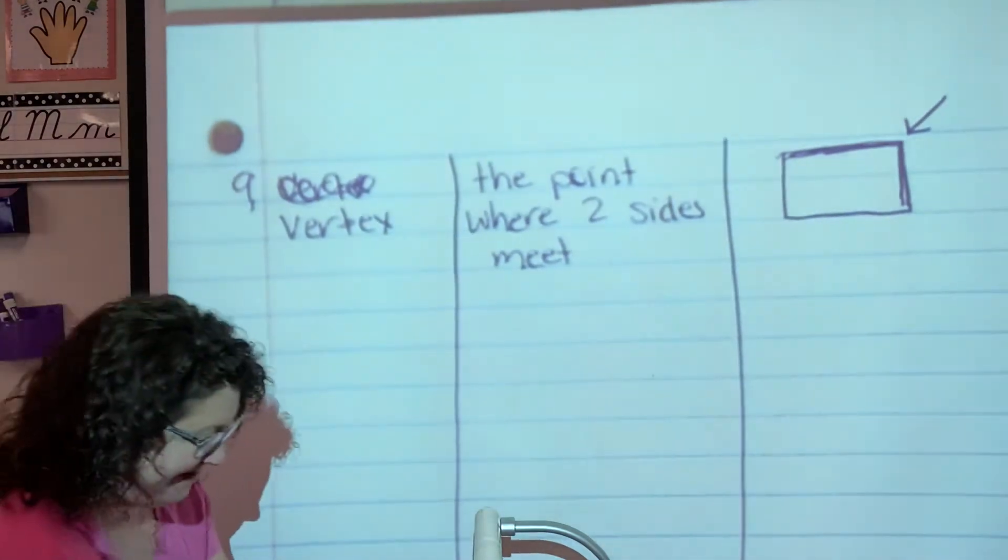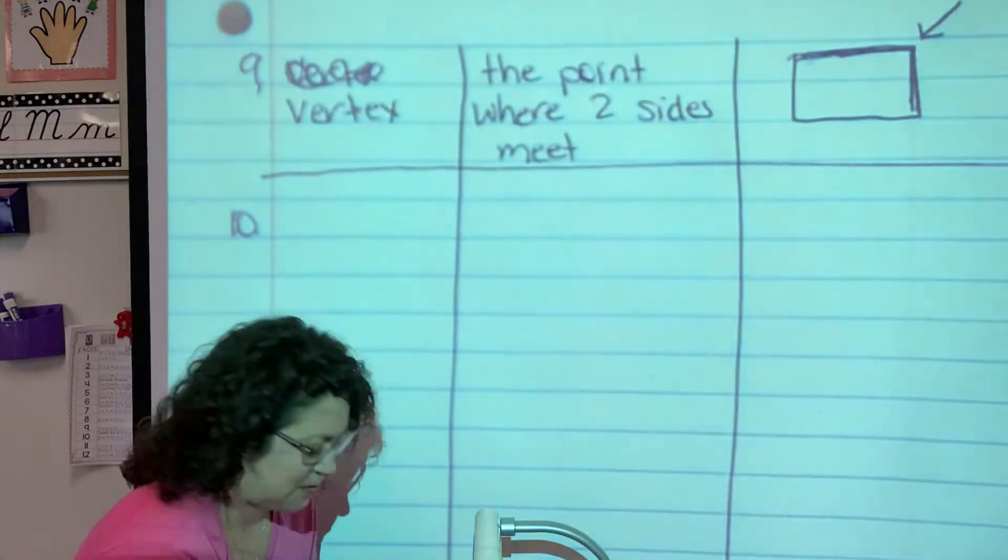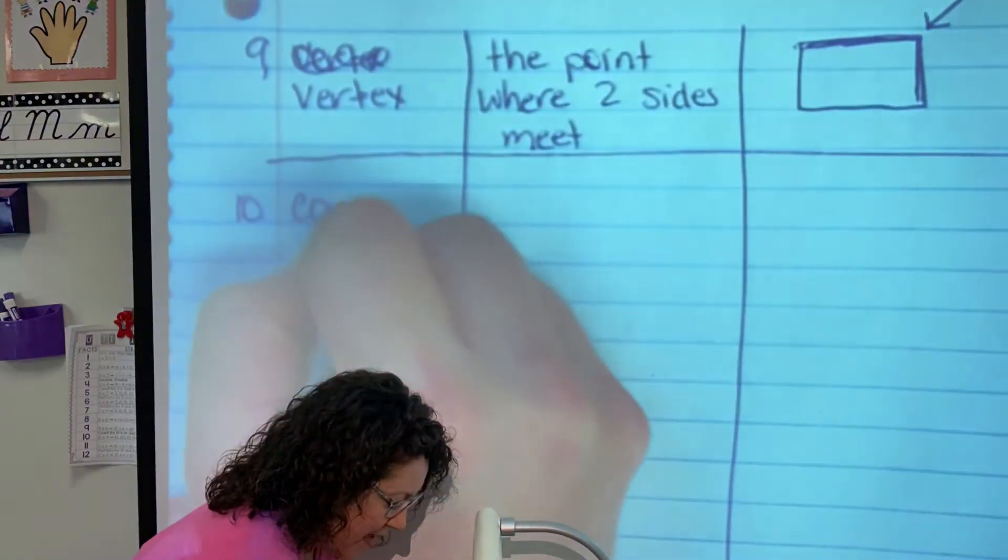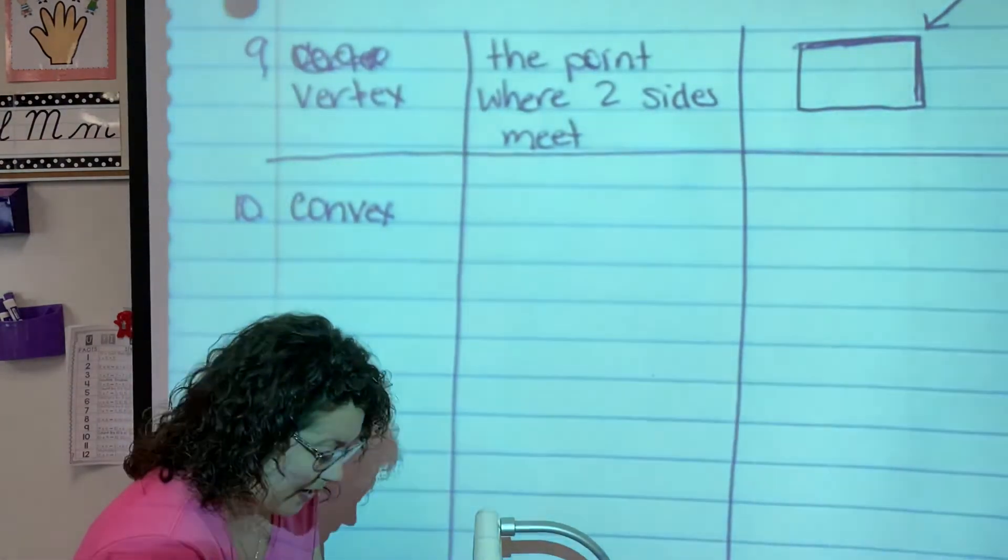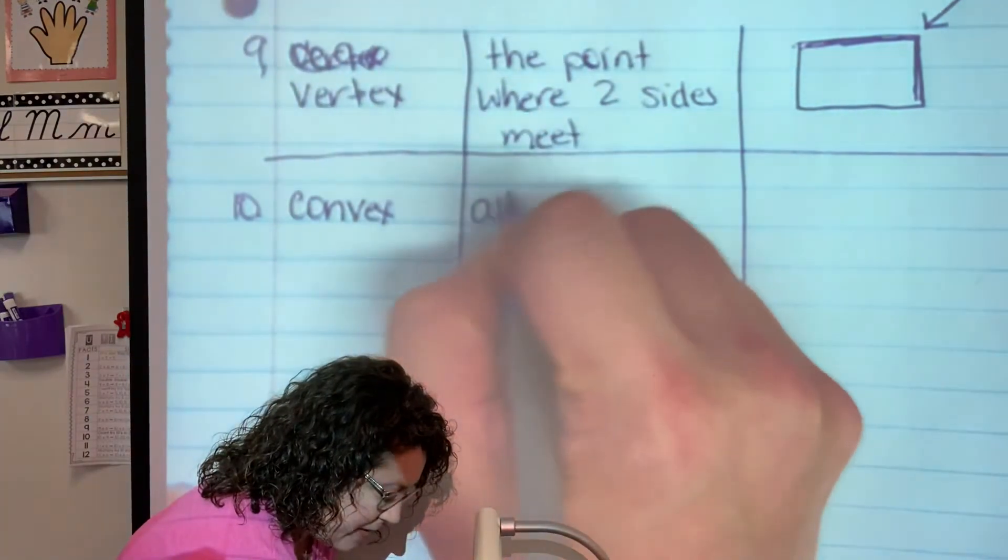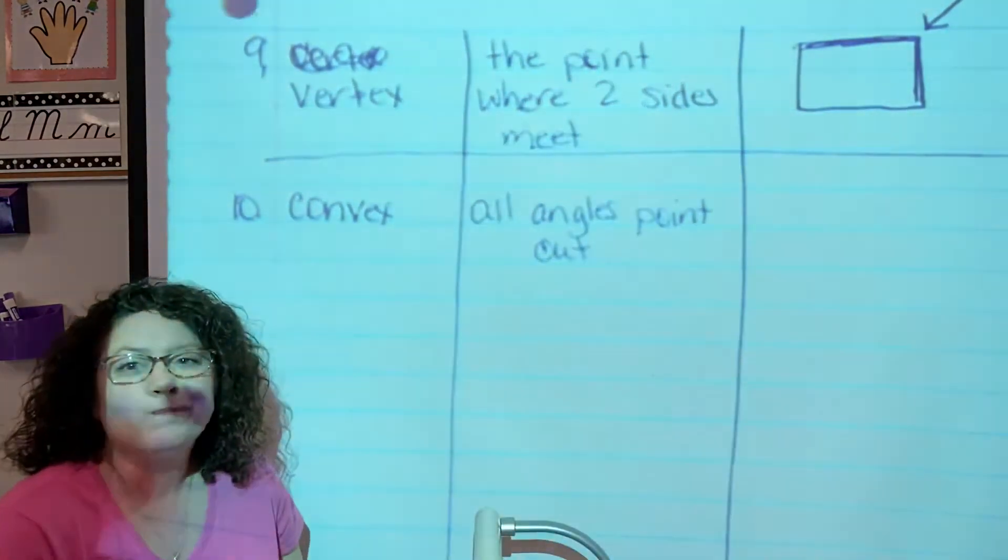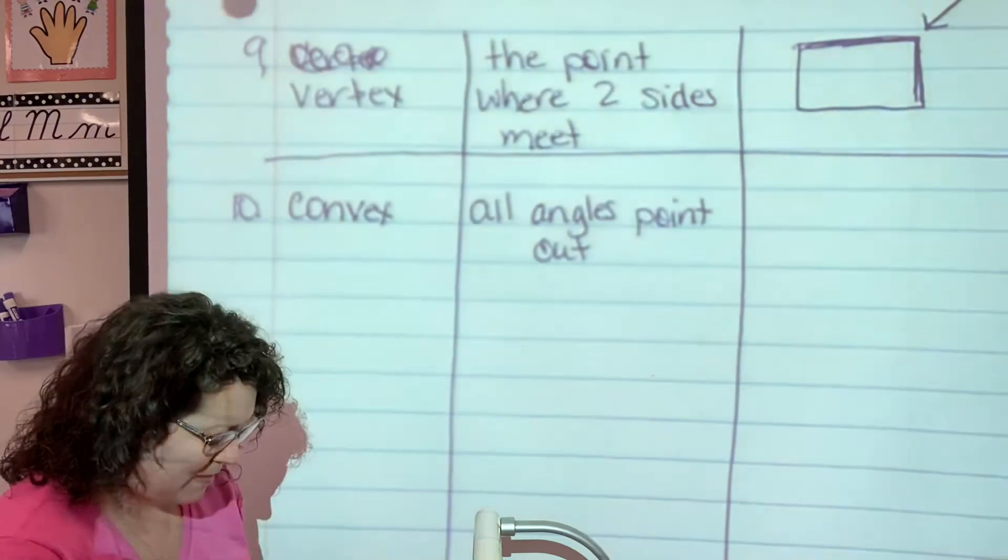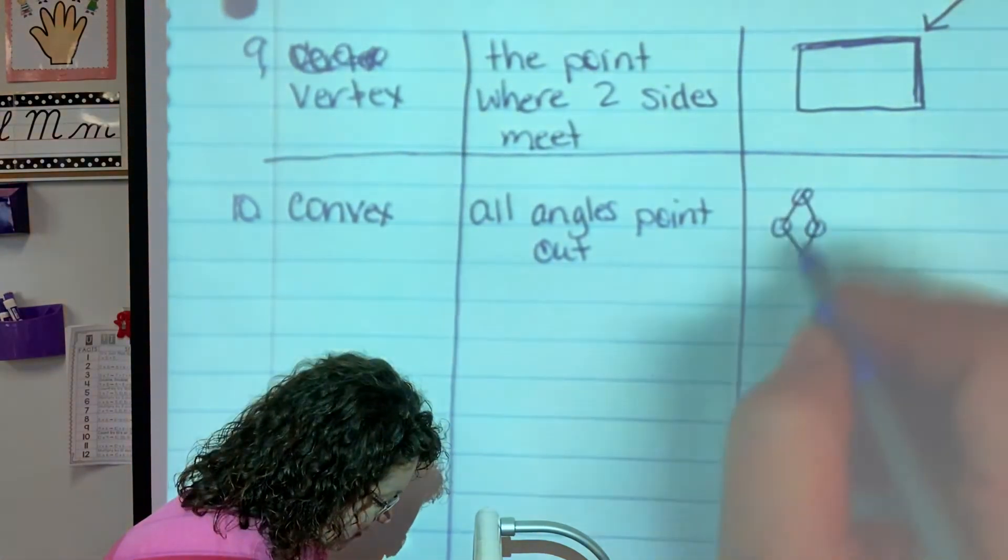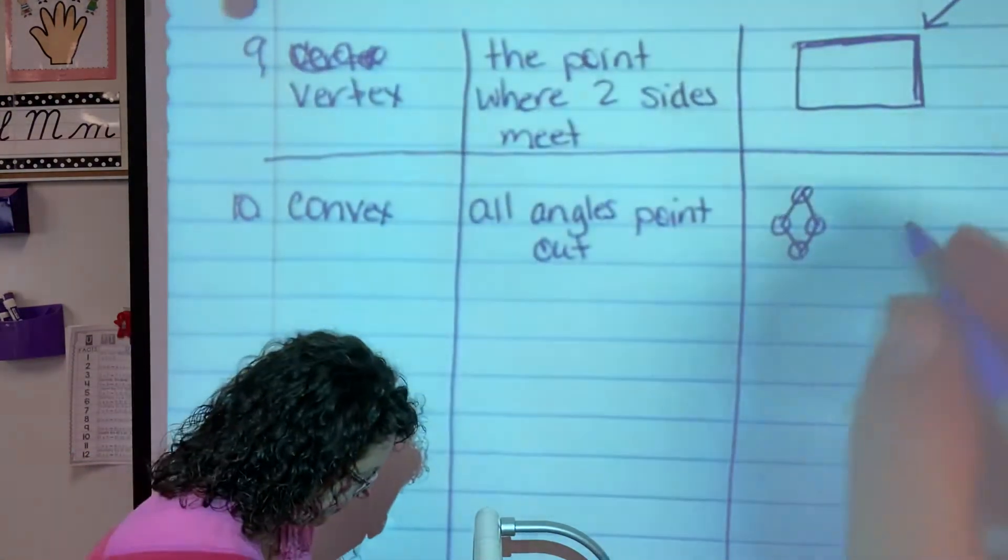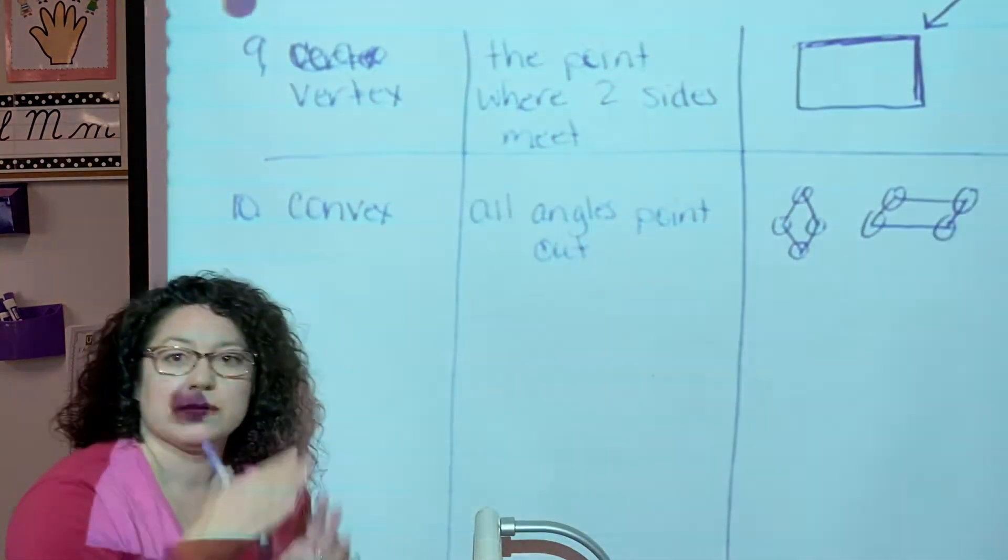Okay, two more. Number 10. I don't think we've ever taken this many notes before. We're going to say the word convex, and a convex polygon, all angles point out. Hmm. You're probably thinking, what on earth does she mean by that? So look here. Pointing out, right? Sticking out. They're pointing out. Okay, they're not going in.